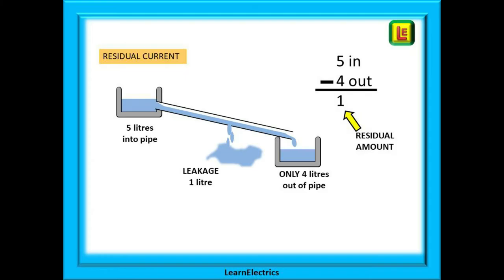It is exactly the same with an electrical circuit. If there is five amps going in along the phase wire but only four amps returning along the neutral wire, where is the missing one amp? This is known as the residual current. It must be going to earth somewhere, and we just need to hope that it's not going through our customer and giving them an electric shock.